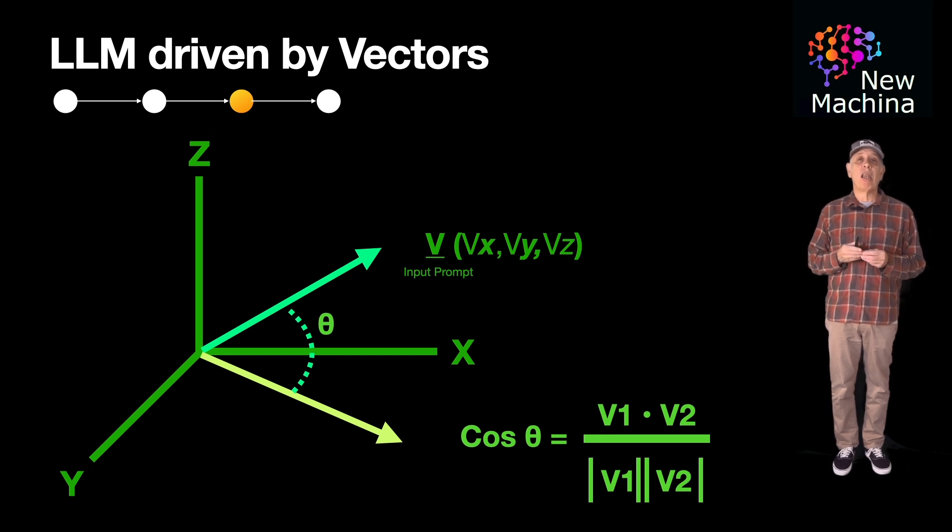This value of theta becomes a measure of similarity between blocks of text. Using this approach, the LLM can find the most relevant blocks of text, which it then uses to generate a response back to the user. I plan to go into more detail on similarity search in an upcoming video, but this should give you a quick high-level conceptual overview of how this works.